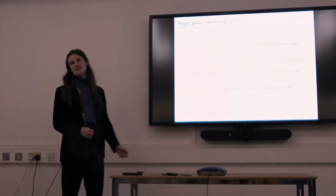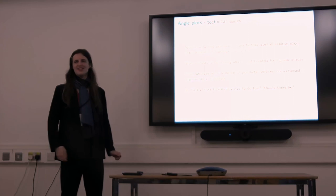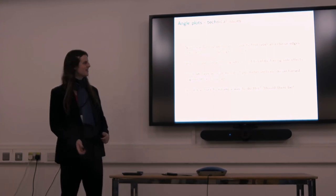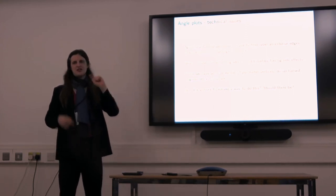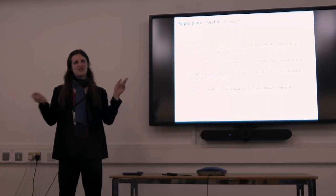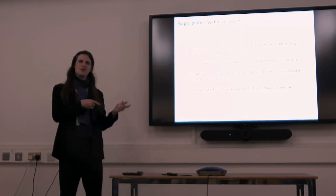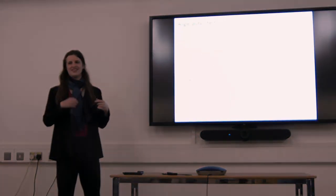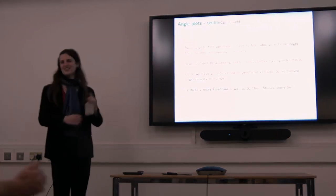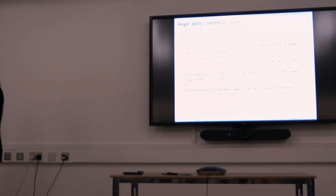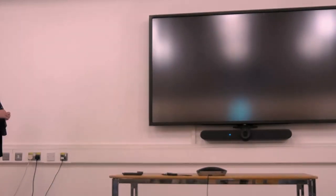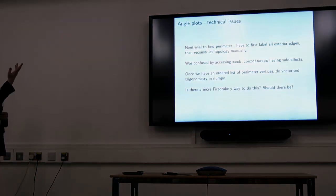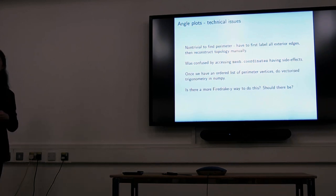I'm kind of interested whether there's a way to extract the entire boundary as a single kind of object with its topology, rather than just labeling the edges, extracting them, and having to reassemble it. I suspect I overlooked a bit of FireDrake functionality. Secondly, mesh.coordinates have side effects. This threw me a little bit. There are certain things like mesh.coordinate that just don't exist until you've accessed mesh.coordinates, at which point they start existing. Once we've got the list, we just do trig on them. I don't know if I'm doing this the right way. This is a horrible hack.